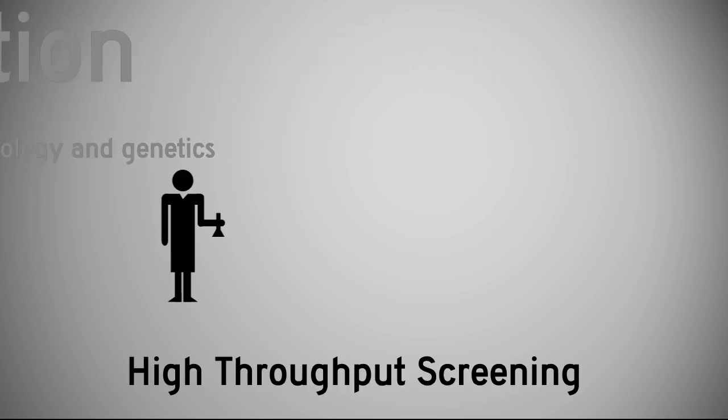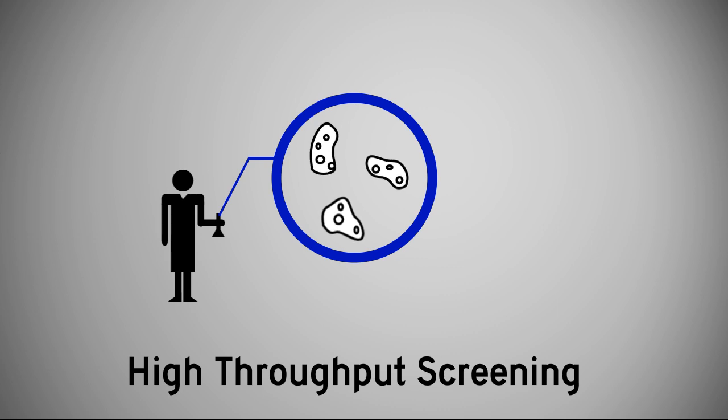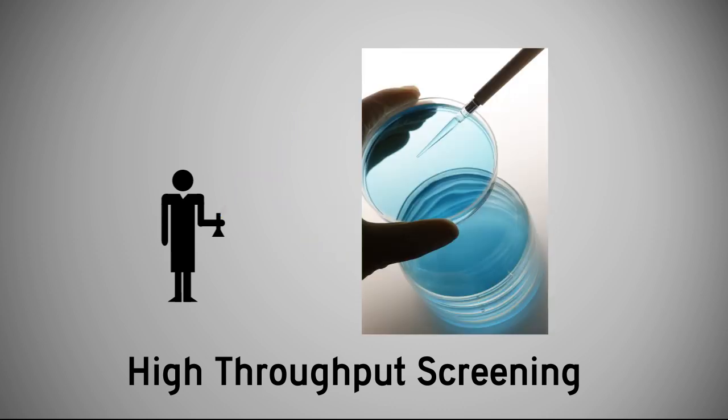When biologists want to find an organism, a bacterium, that has a particular property of interest, say, resistant to a particular kind of antibiotic, they don't test one bacterium at a time. Instead, they seed a diversity of colonies onto petri dishes.